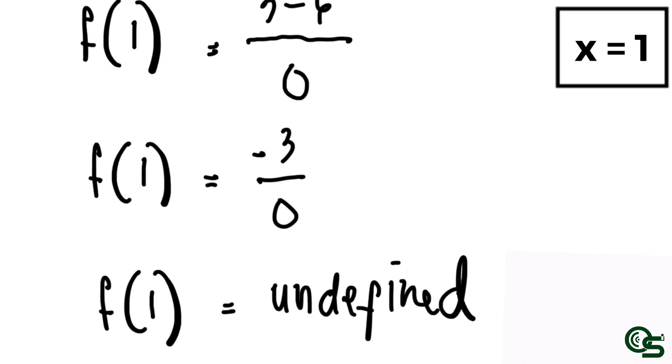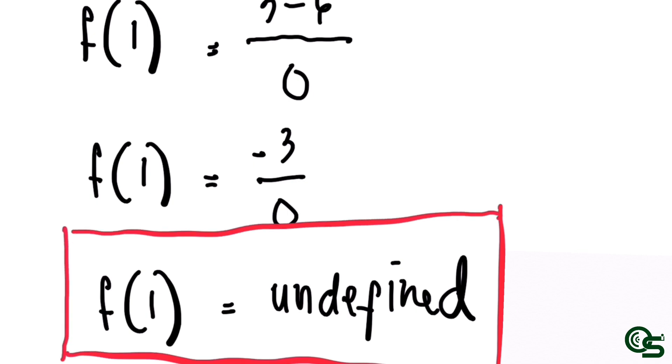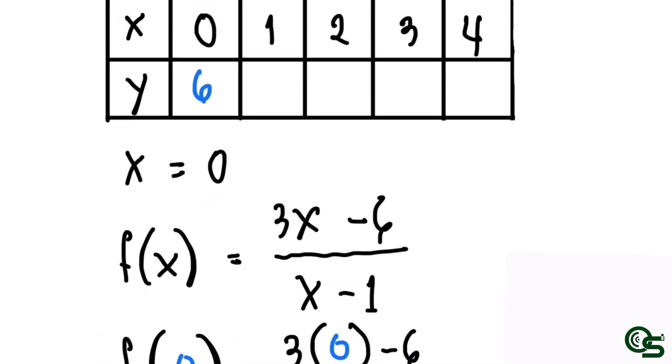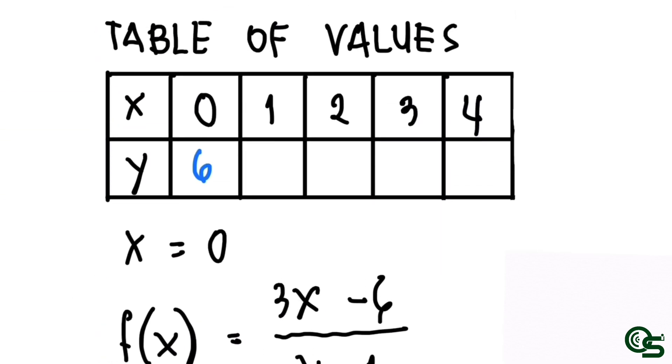Take note: any non-zero number divided by 0 is always undefined. So the computed value for the table of values, f(1) is undefined, and we will place undefined on the second column below 1 in the row of y.